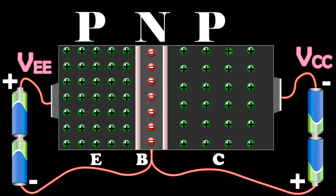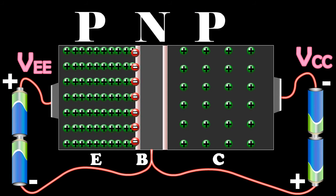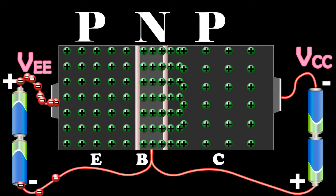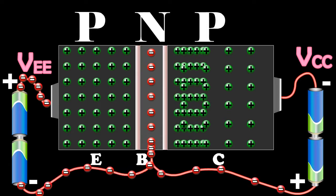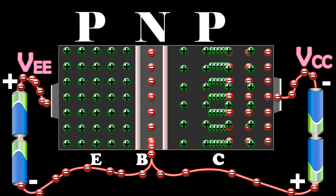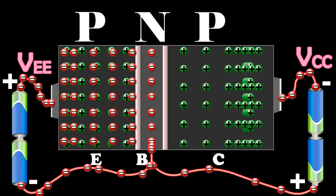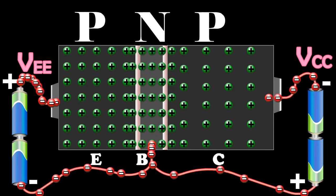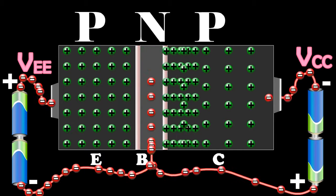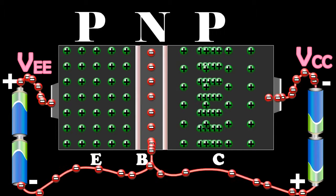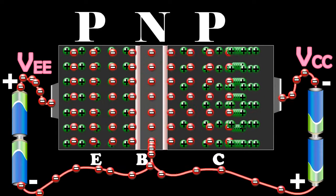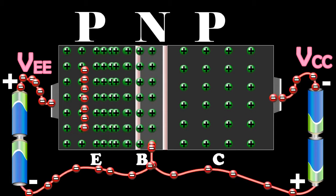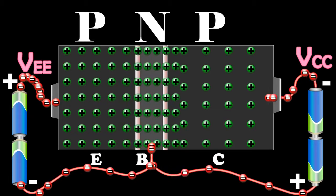Since the emitter base junction is forward biased, a large number of holes cross the junction and enter the base. At the same time, very few electrons flow from the base to the emitter. These electrons, when they reach the emitter, recombine with an equal number of holes in the emitter. The loss of total number of holes in the emitter is made up by the flow of an equal number of electrons from the emitter to the positive terminal of the battery.